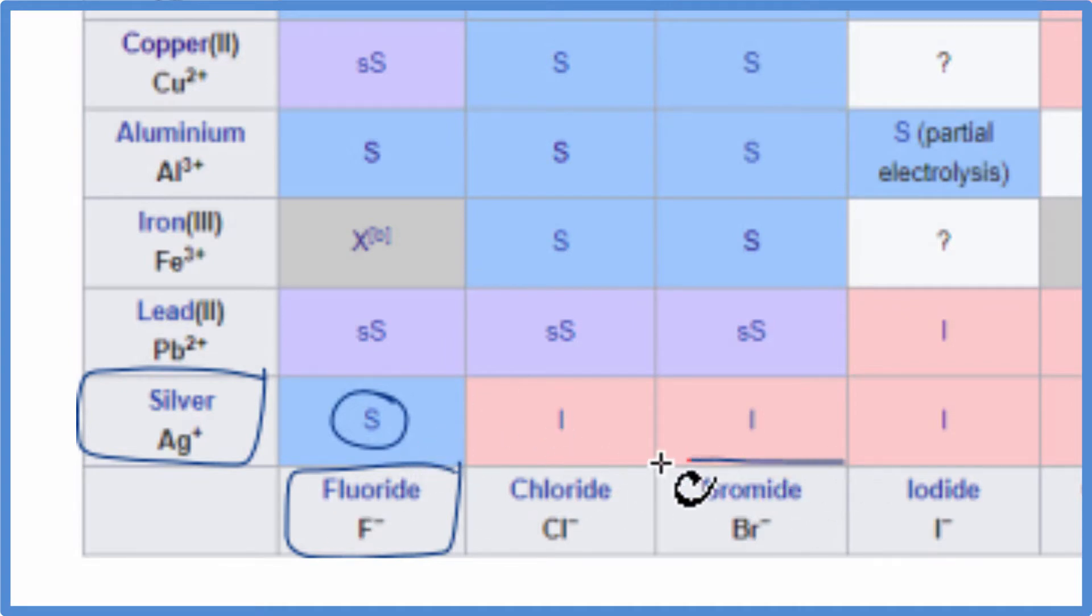We look at the bromide though. We go over to the bromide, silver bromide right here. That I, insoluble. It won't dissolve, so it's a solid. AgF is aqueous, AgBr is a solid.